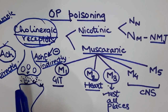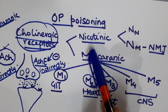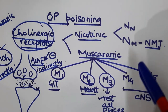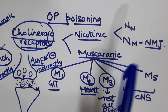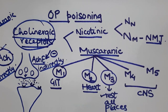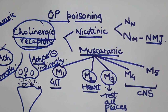We have nicotinic and muscarinic receptors. Nicotinic receptors are of two types: NN and NM. NM is present on the neuromuscular junction. Muscarinic receptors include M1, M2, M3, M4, and M5. M1 is present on the GIT, M2 on the heart, M3 on all places, and M4 and M5 on the CNS. Acetylcholine acts directly on any of these receptors.